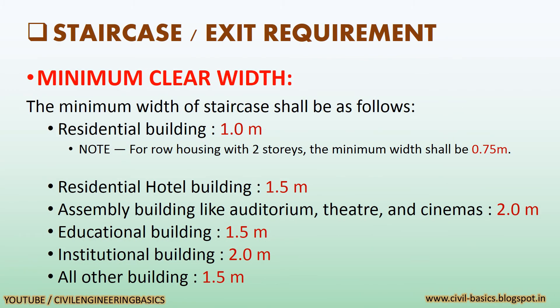Now we will see the requirements of staircase and exit. The minimum width of staircase shall be as follows: in residential buildings, 1.0 meter (note: for row housing with 2 stories, the minimum width shall be 0.75 meter); in residential hotel buildings, 1.5 meter; in assembly buildings like auditoriums, theaters and cinemas, 2.0 meter; in educational buildings, 1.5 meter; in institutional buildings, 2.0 meter; and in all other buildings, 1.5 meter.